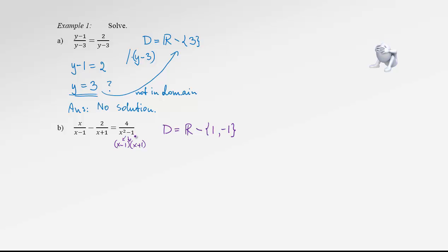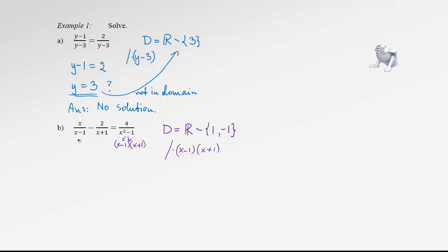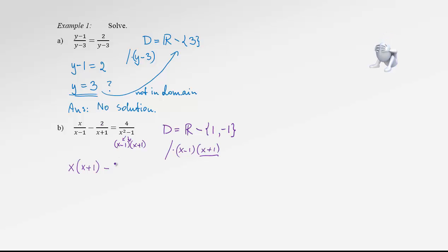We can start solving. Let's multiply by the LCD, which is (x minus 1)(x plus 1). Multiplying the first fraction by the LCD reduces the x minus 1, leaving x plus 1. So we multiply x times (x plus 1). Then minus — for the second term, x plus 1 is reduced, so we multiply by x minus 1, giving 2 times (x minus 1). Equals 4 — and we don't need to multiply by anything here because both brackets are reduced.